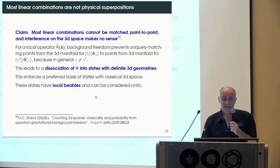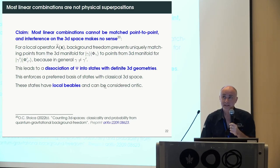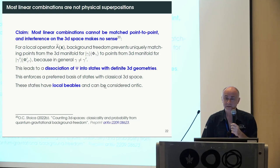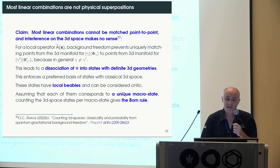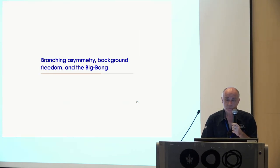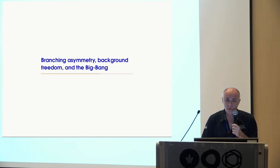I claim these states with definite 3D geometries have local beables — at least the geometry, but also the classical fields that live on this geometry. And as earlier, if we assume they correspond uniquely to macrostates, we get the Born rule.